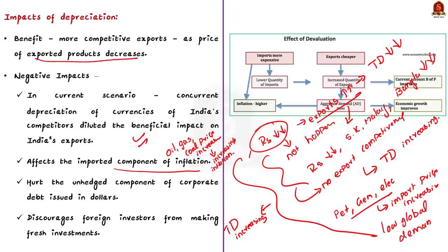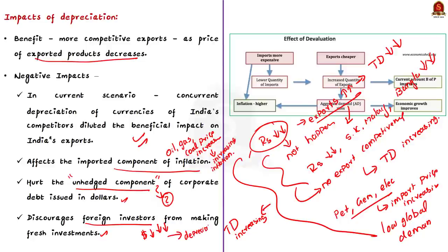Thirdly, a weakening rupee is also likely to hurt the unhedged component of corporate debt issued in dollars — take this as homework to find out what 'unhedged component' means. Finally, a continuously sliding exchange rate discourages foreign investors from making fresh investments in India. Since the flow of dollars into our economy is coming down, the value of the rupee relative to the dollar is also falling. These are the four main disadvantages associated with the present rupee depreciation.